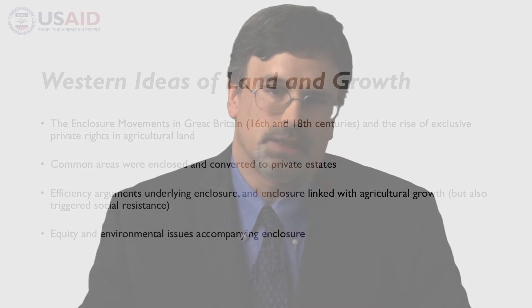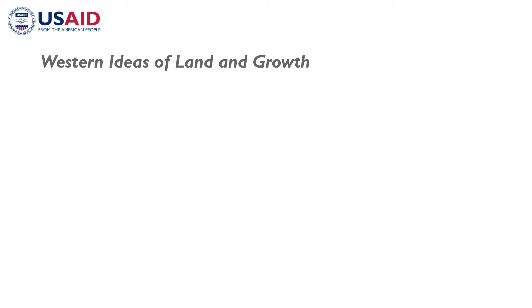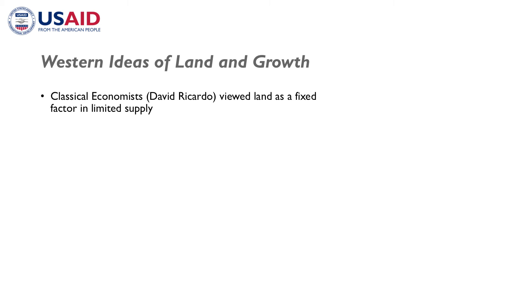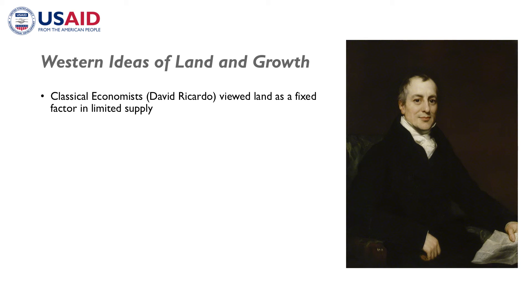Particularly in the early Industrial Revolution, we see the start of theorizing about the relationship of land to growth. The early classical economists, particularly David Ricardo, saw land as one of the main factors of production, seen really as a fixed factor of limited supply, critical for agricultural production and for the generation of surplus. From Ricardo, we also get the idea that there may be limits to growth.